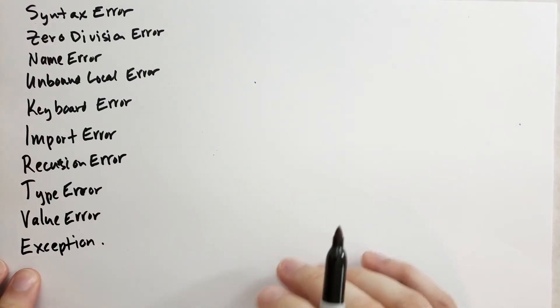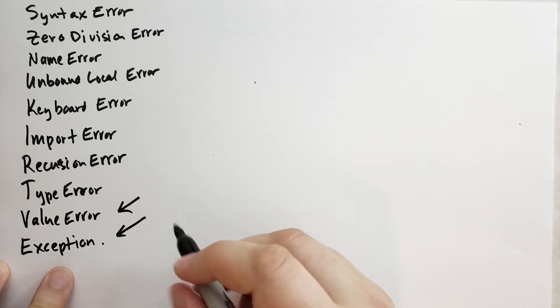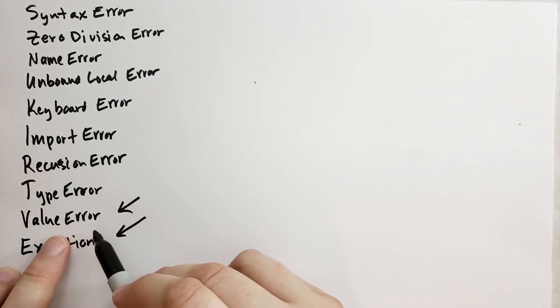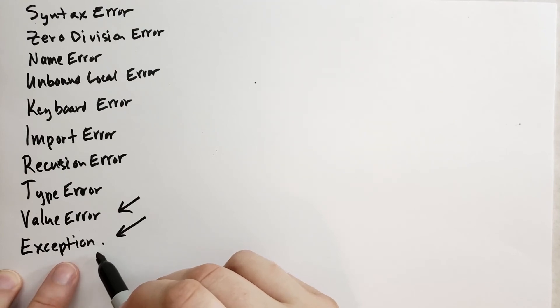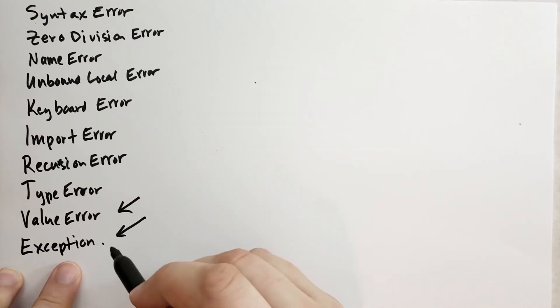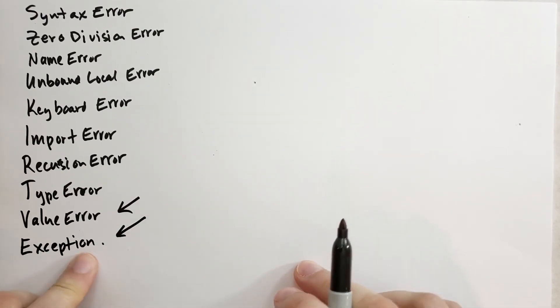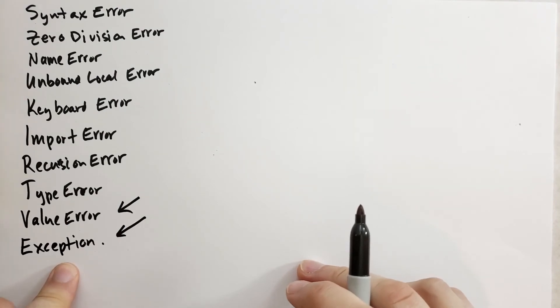There's also the catch-all exception. Which exception type should you use? Typically, I either use value error or the exception type. The value error is for when I have a function and I don't like the values that were passed in. And the exception is for pretty much all the other cases. When we cover object-oriented programming, you'll see how you can write your own exceptions. It's rather easy to do.